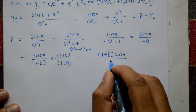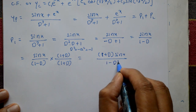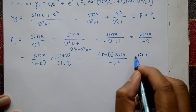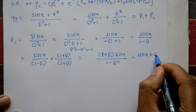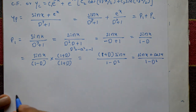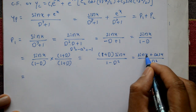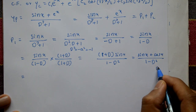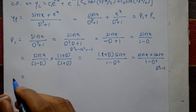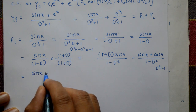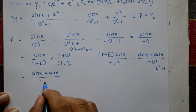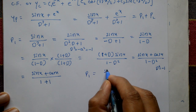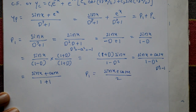Expanding: 1² − D² in the denominator. Opening the bracket: 1 · sin x = sin x, and D · sin x = cos x (since D is the differential operator). So numerator is sin x + cos x, divided by (1 − D²). Applying Type 2 again with a = 1: D² = −1, so denominator = 1 − (−1) = 2. Therefore P1 = (sin x + cos x) / 2.